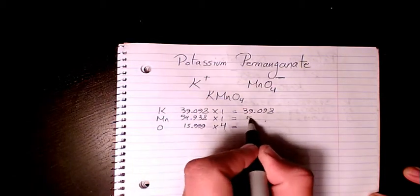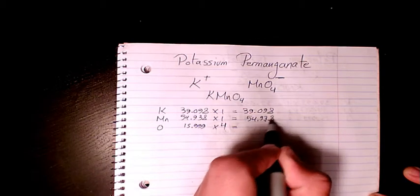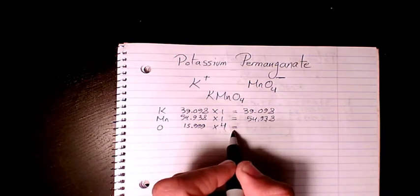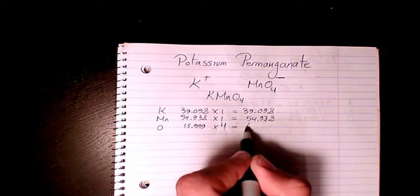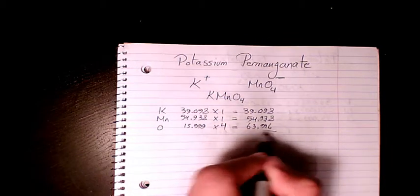So that's gonna be the same, here is gonna be the same, and then four times 15.999 makes it 63.996.